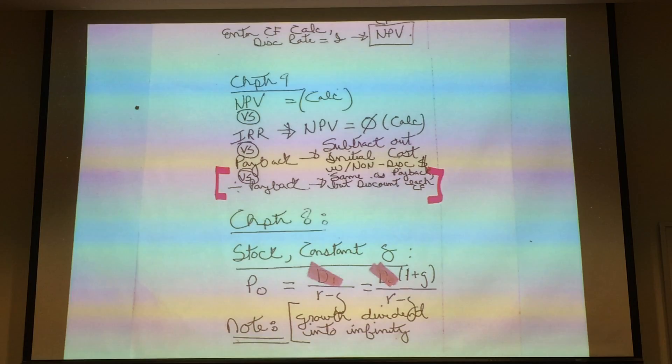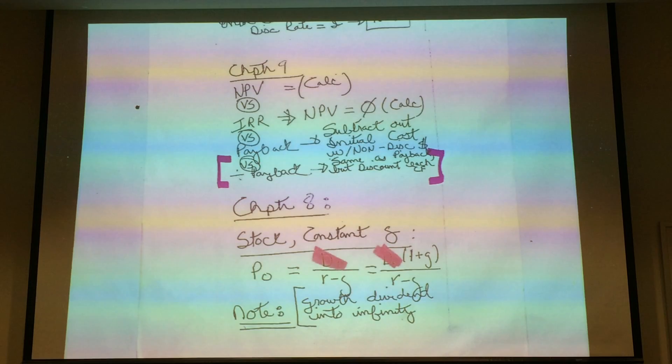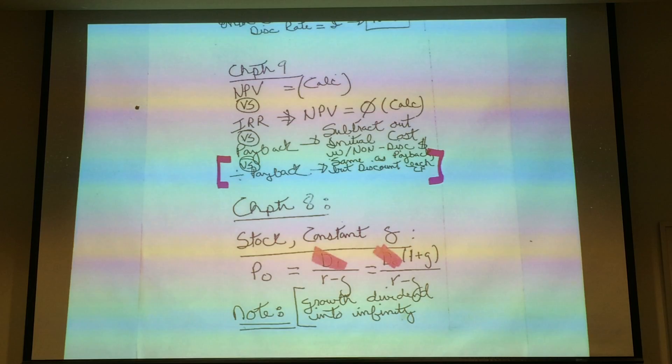Chapter 8, stocks. You're going to have to know how to price a stock when you just have one dividend growth rate. That's the simple dividend discount model. That's what's on this slide right here. Stock equals P0, where that's dividend 1 over R minus G.